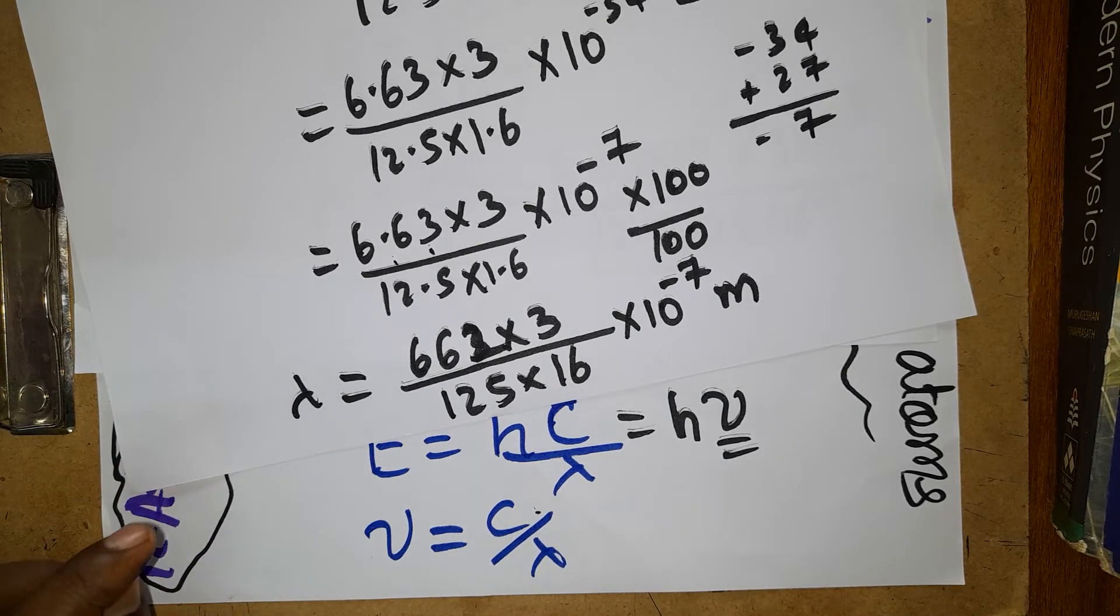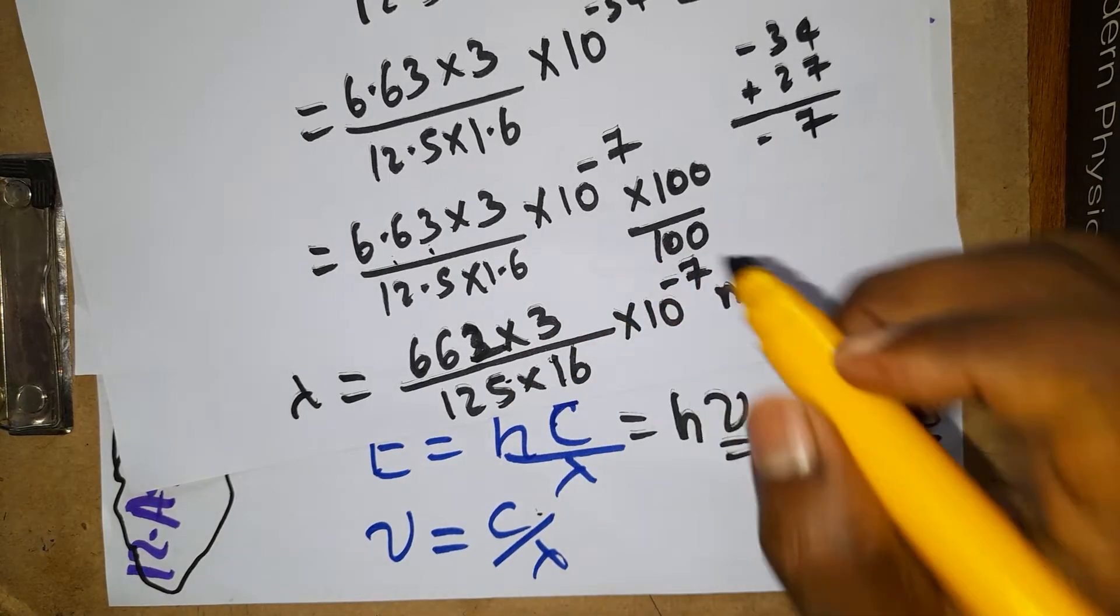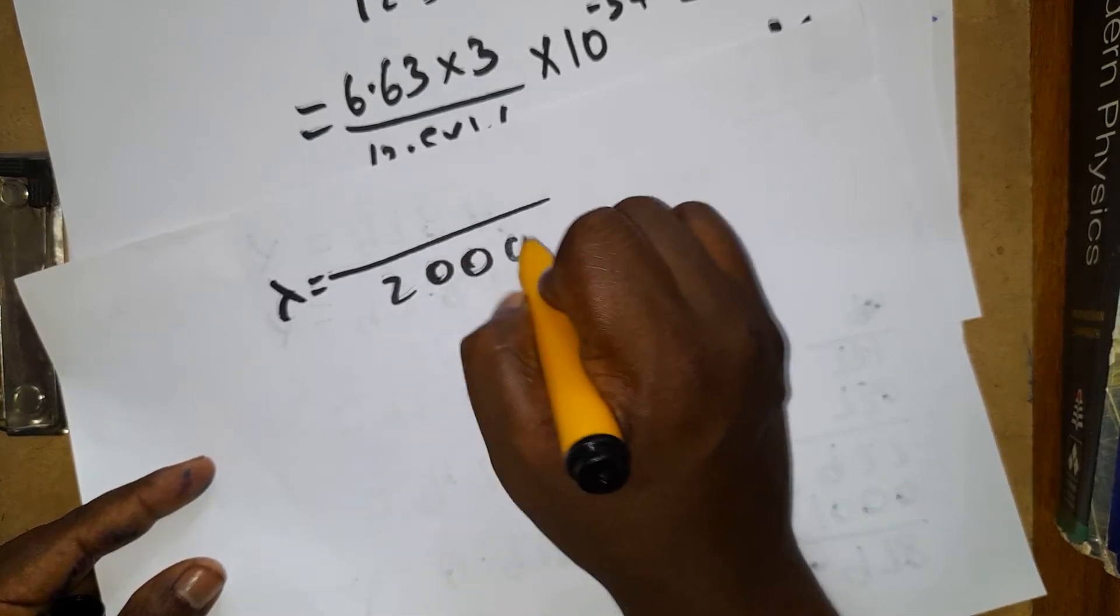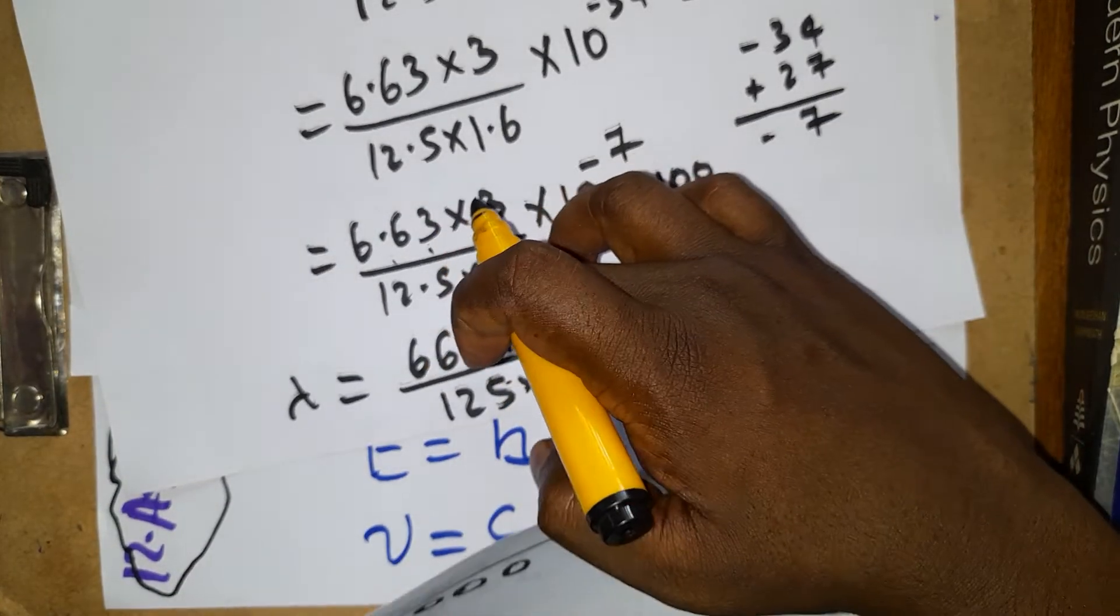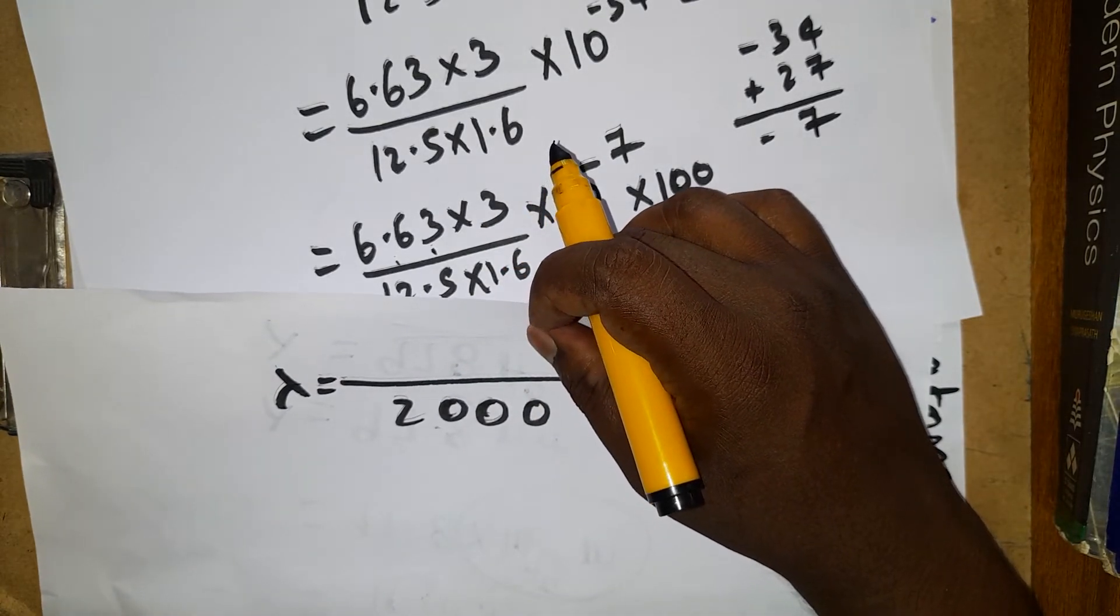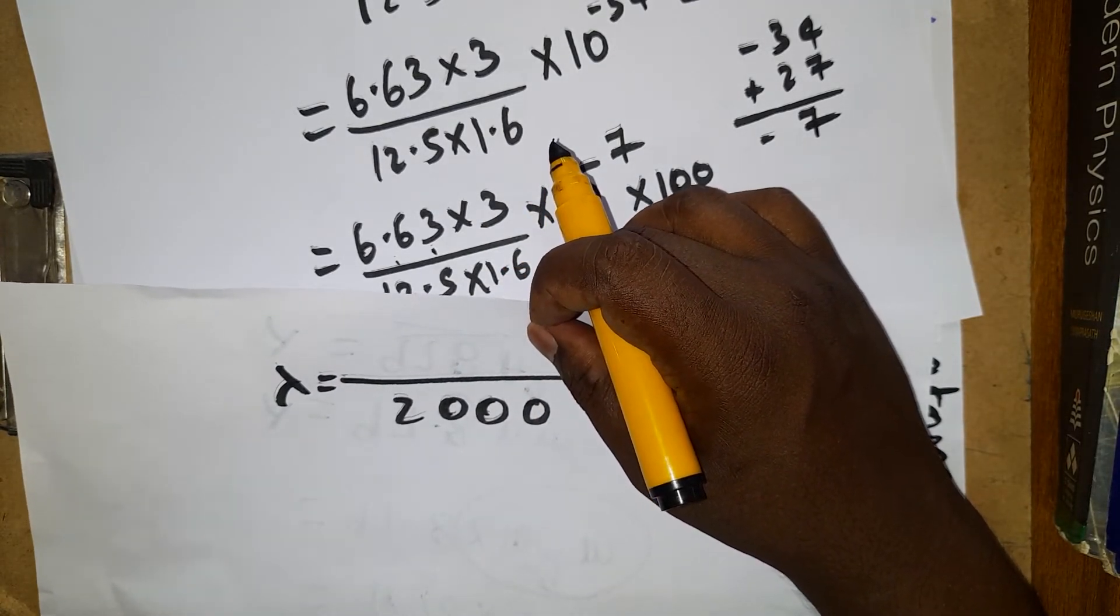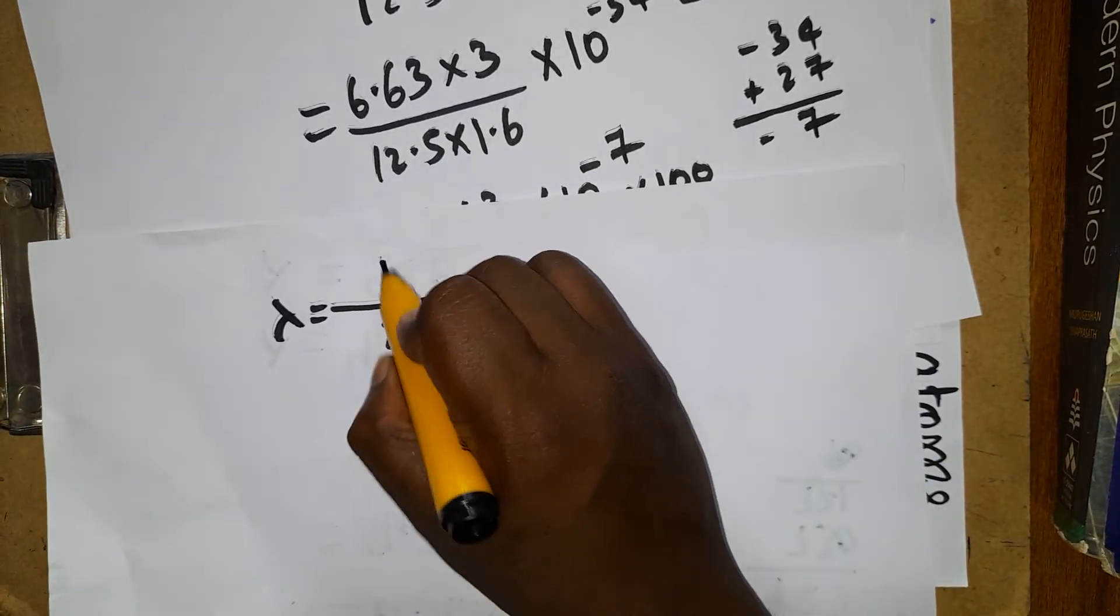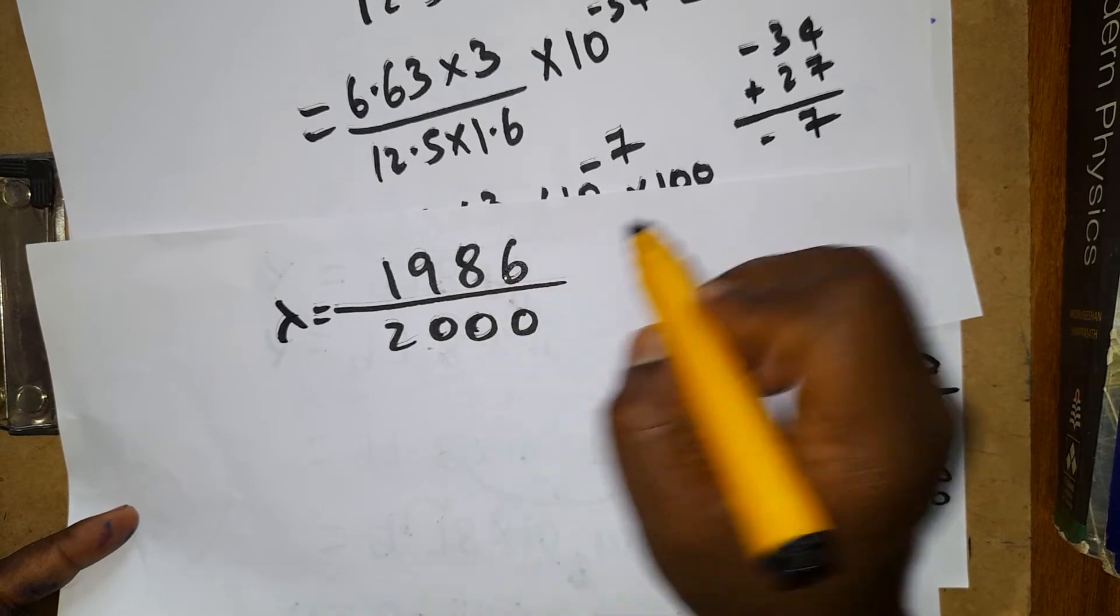We have to make it with the multiplication. Two decimals on numerator, two decimals on denominator, you can multiply with 100 numerator and 100 denominator. The numerator becomes 663 into 3, denominator becomes 125 into 16, into 10 power minus 7.